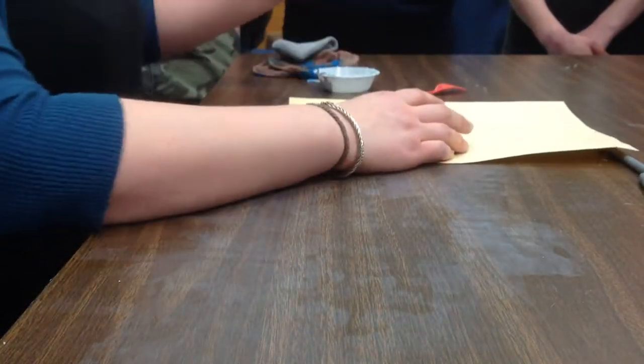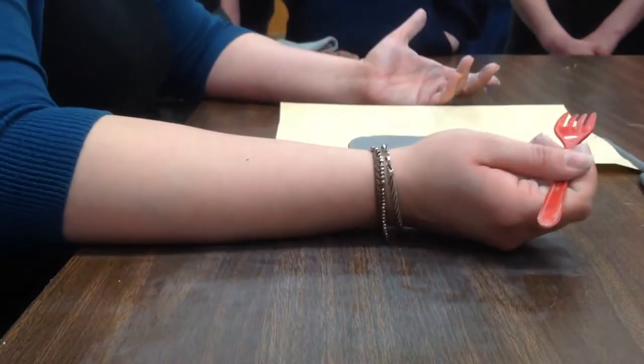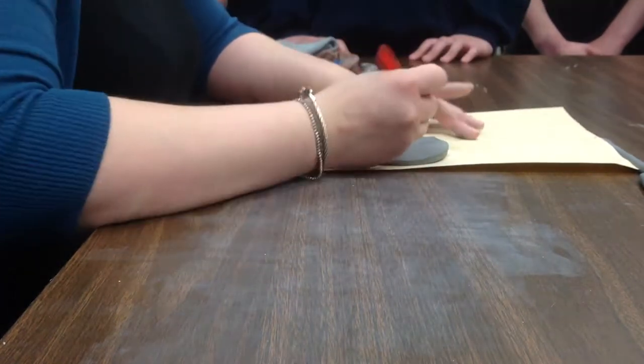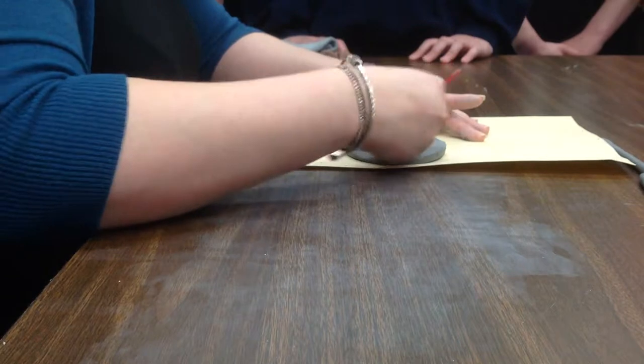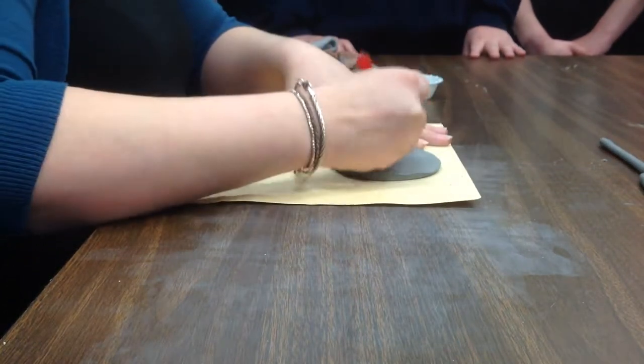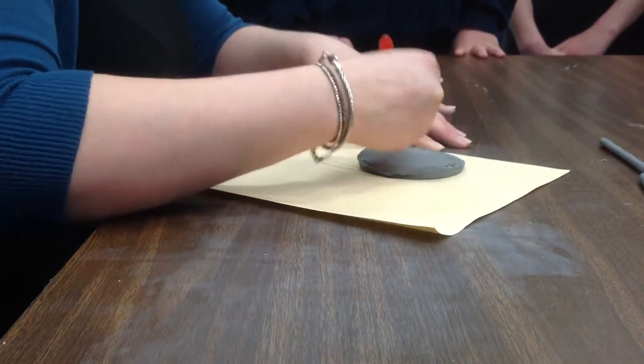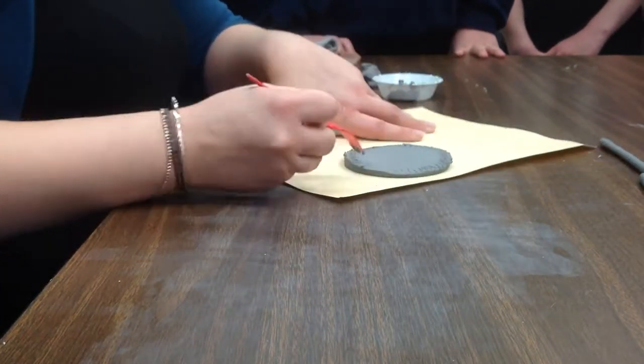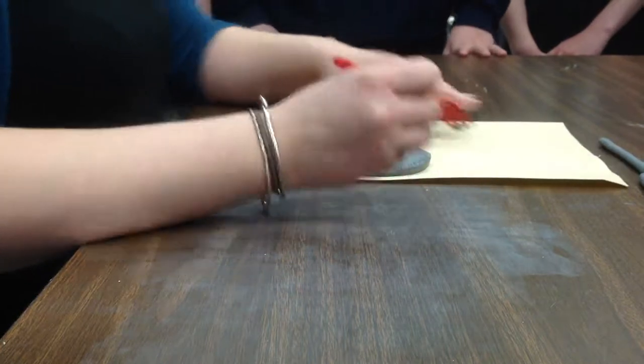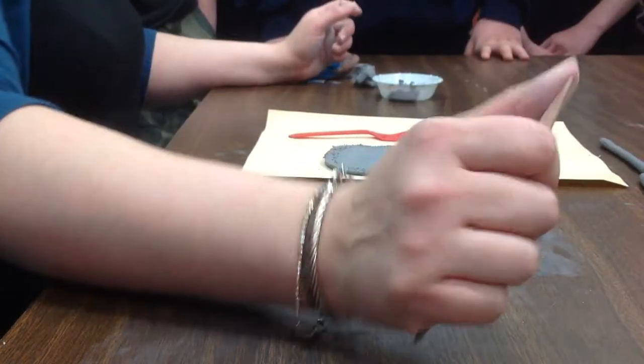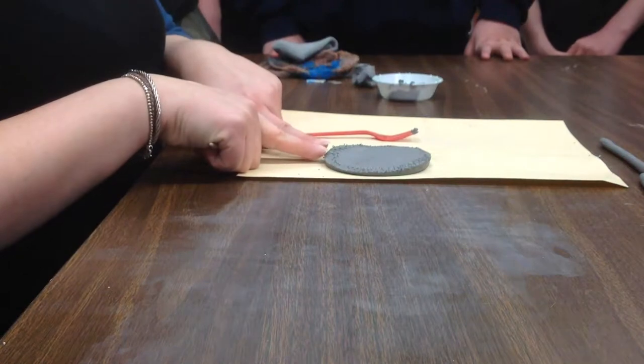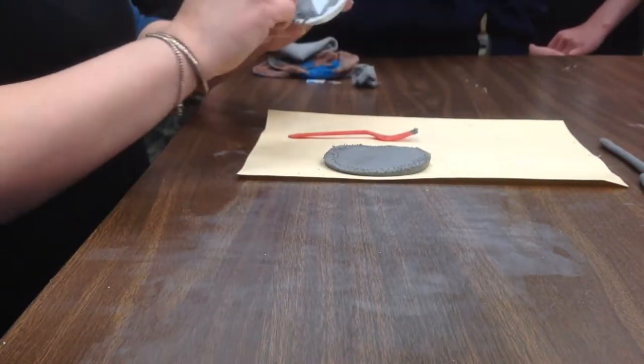So now, you are going to score and slip. Scoring is roughing up the surface. Slip is just really wet clay or clay glue, kind of like clay mud. So I'm going to take - you're all going to have a fork - scuff up or mark the edge all the way around. Trust me when I tell you, if you do not do this, it is going to fall apart. There are kids that don't score and slip and then their projects fall apart and then they're really sad about it.